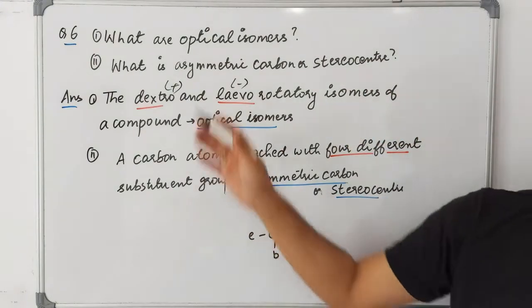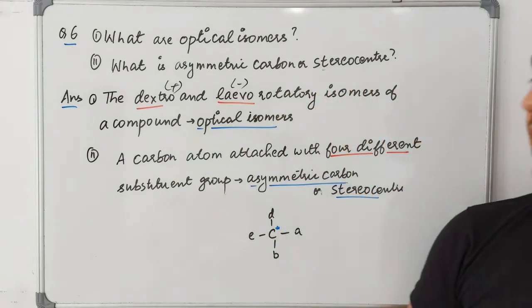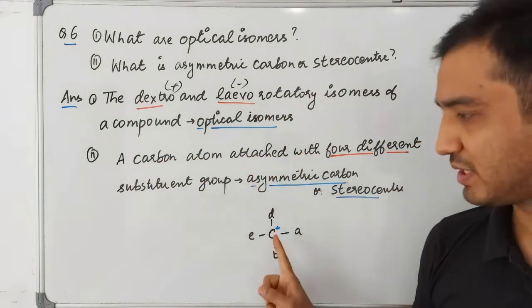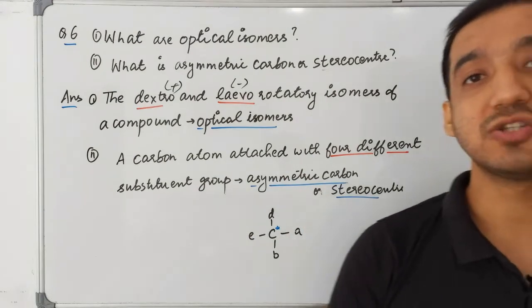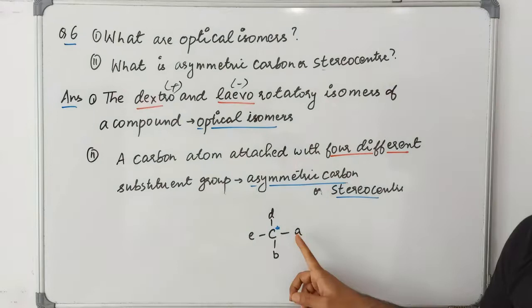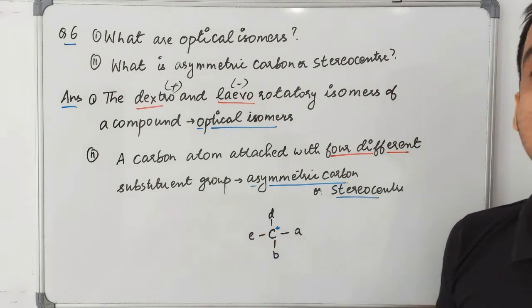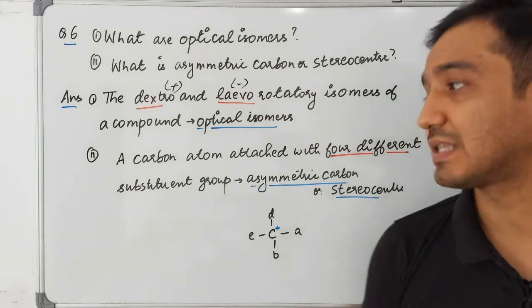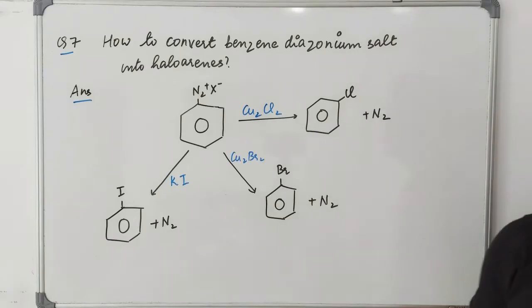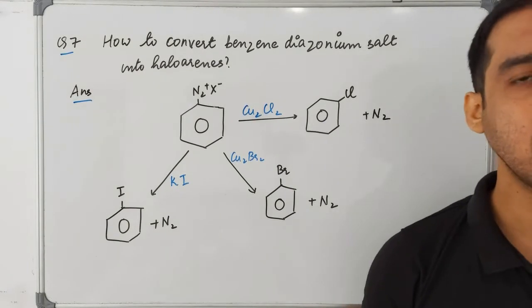What is an asymmetric carbon or stereocenter? It is a carbon attached to four different substituent groups. Suppose there is a carbon attached to four different groups — a, b, c, d. Then this carbon is called the asymmetric carbon or stereocenter.